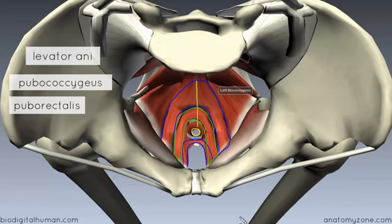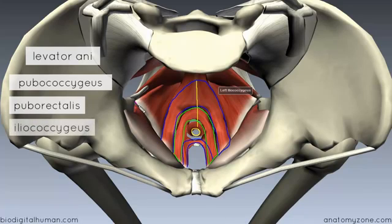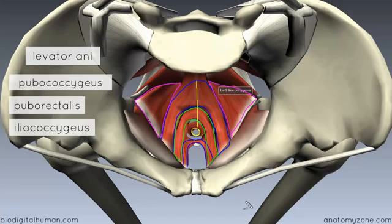Then we've got the posterior fibers of the levator ani muscle, called the iliococcygeus fibers, which I'm outlining in purple. Those are the three collections of fibers which make up the levator ani muscle.